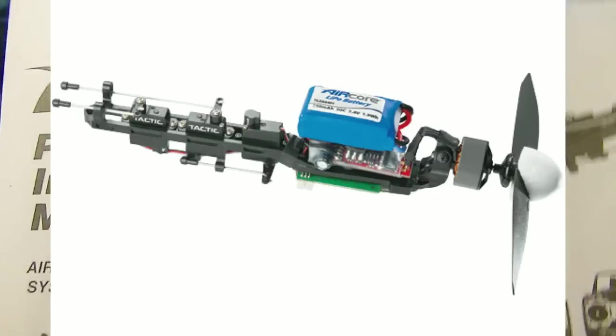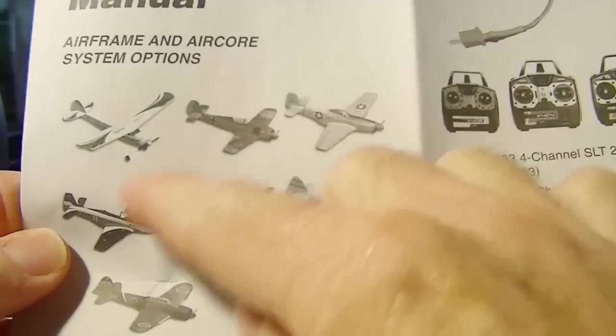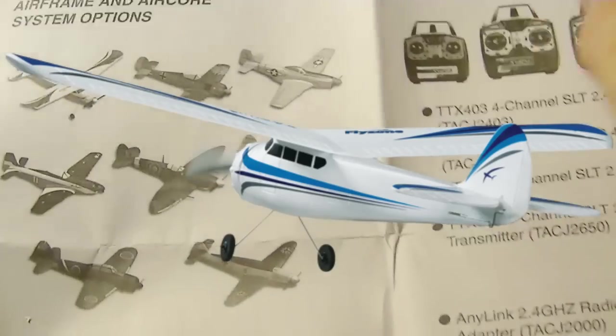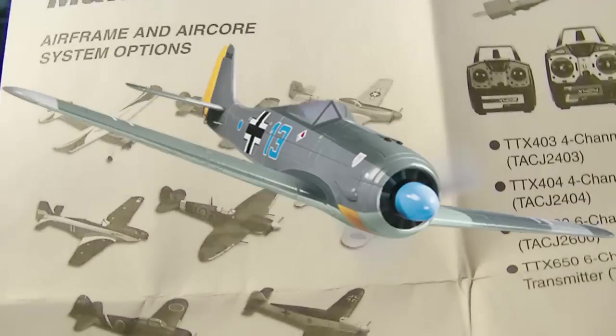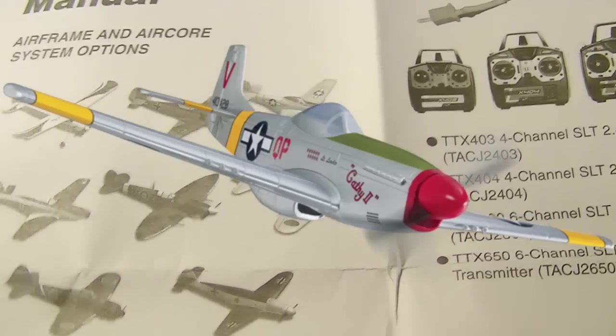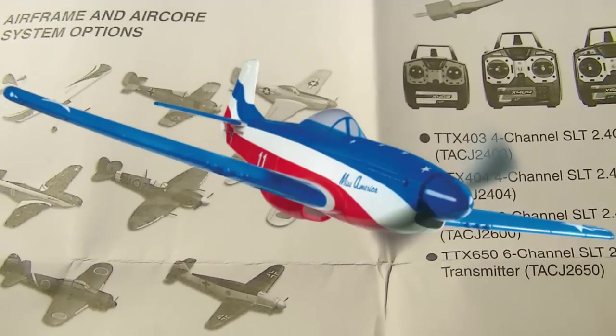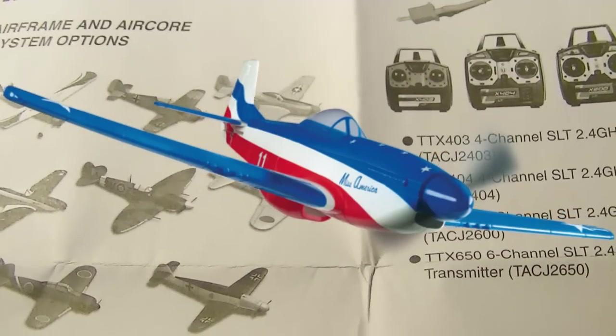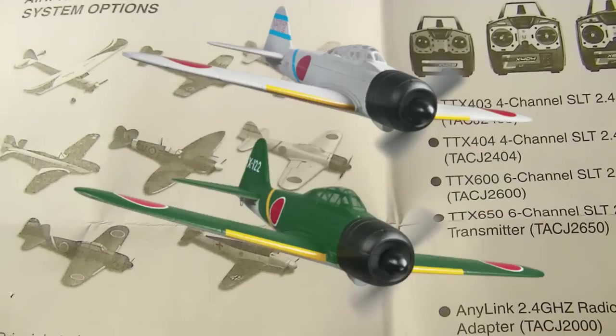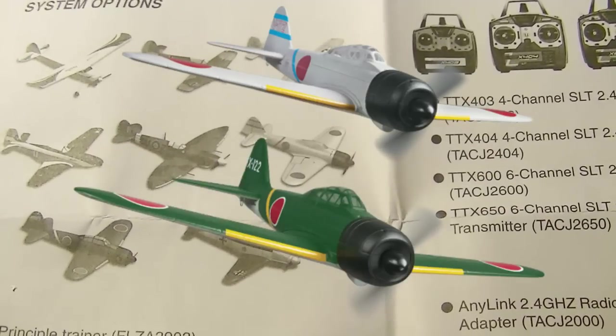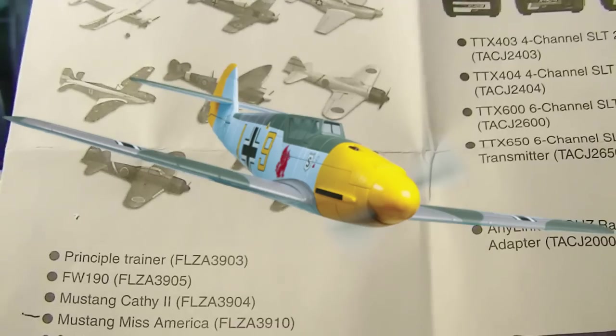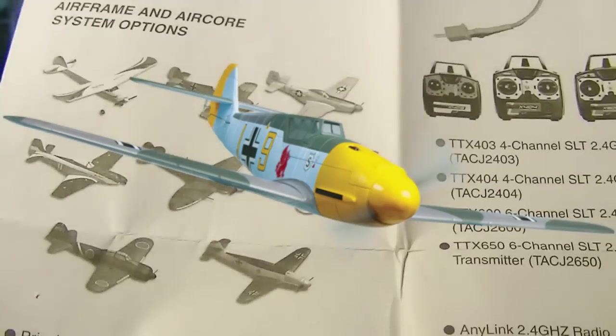The AirCore series includes the Principal Trainer, the FW-190, the Mustang Kathy II, and my favorite the Mustang Miss America - very colorful. They also have the Spitfire, the Zeros in white and green, an ME-109, and they say there's some other airframes coming.